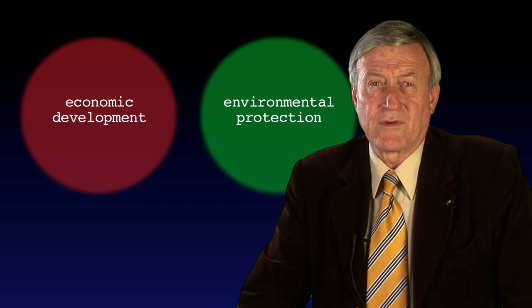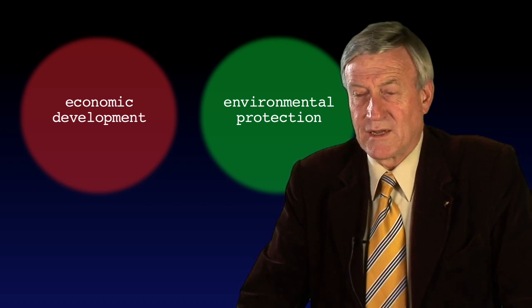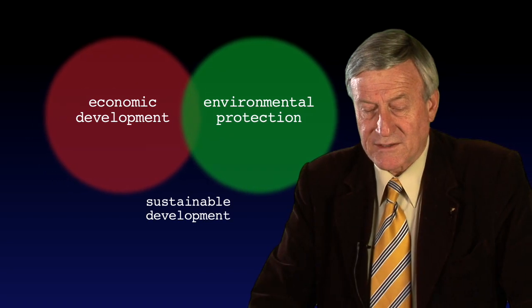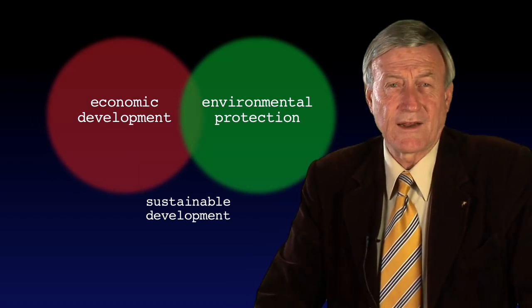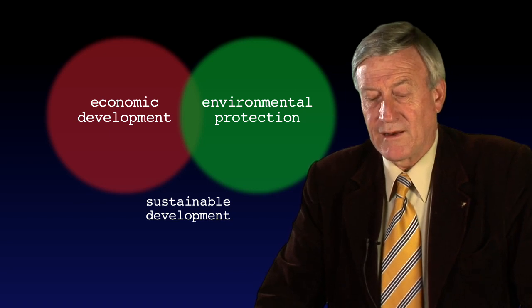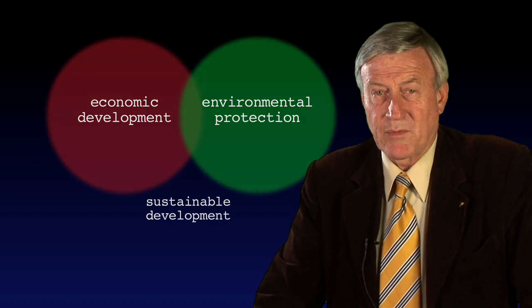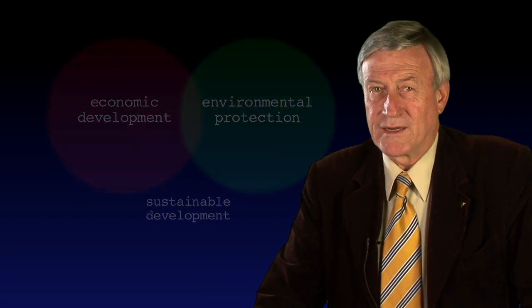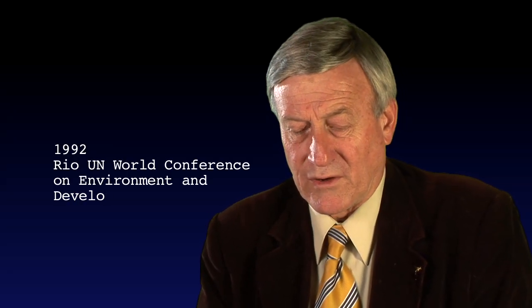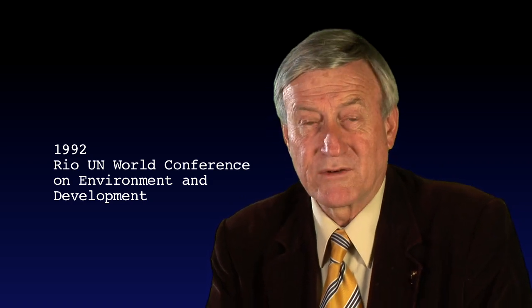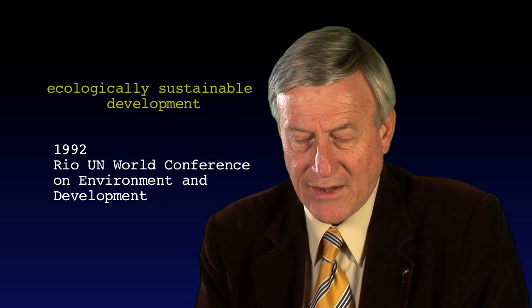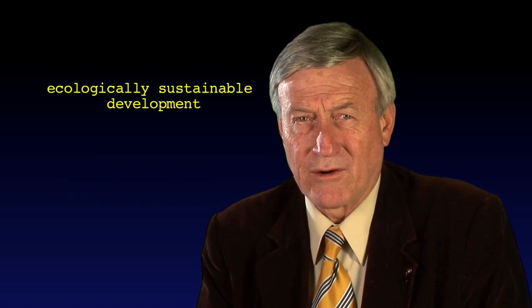And they came up with the term sustainable development as the solution to this issue. They suggested that economic development could actually improve the environment and environmental protection could improve the economy, but the two had to work together in new ways. Governments everywhere had to try and work out what it actually meant. By 1992, they had to report on how they were going at achieving this understanding. The Australian government at the Rio Conference on Environment and Development presented an approach they called Ecologically Sustainable Development, and it was informing all areas of government at that time.